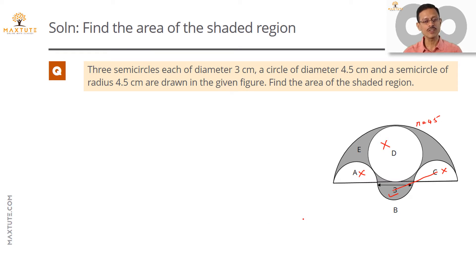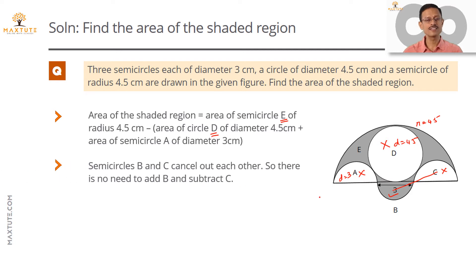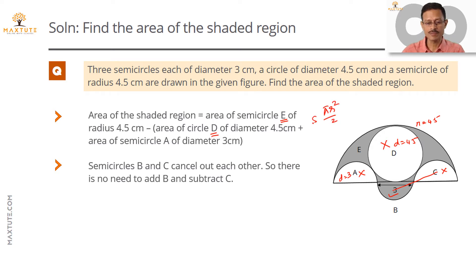So the area of the shaded region boils down to finding the area of semicircle E, and from that subtracting the area of circle D and semicircle A. The nullifying happens because we are adding and subtracting the same area. The formula for a semicircle's area is πr²/2, and for a circle it is πr². Let's convert all dimensions into radii and into equivalent fractional forms to make calculations simpler.